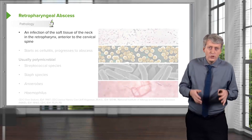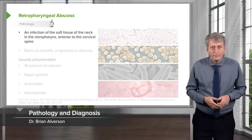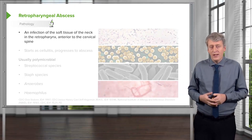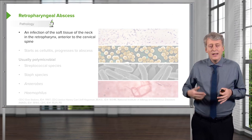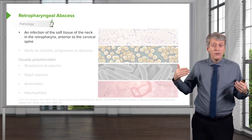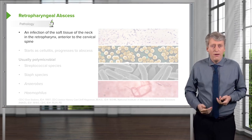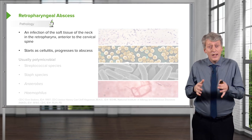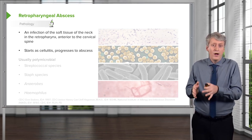Let's switch next to an even deeper upper airway infection and talk about the retropharyngeal abscess. This is an infection of the soft tissue of the neck in the retropharynx, that area just anterior to the cervical spine. It starts off as a cellulitis and can progress to a frank abscess that requires drainage.